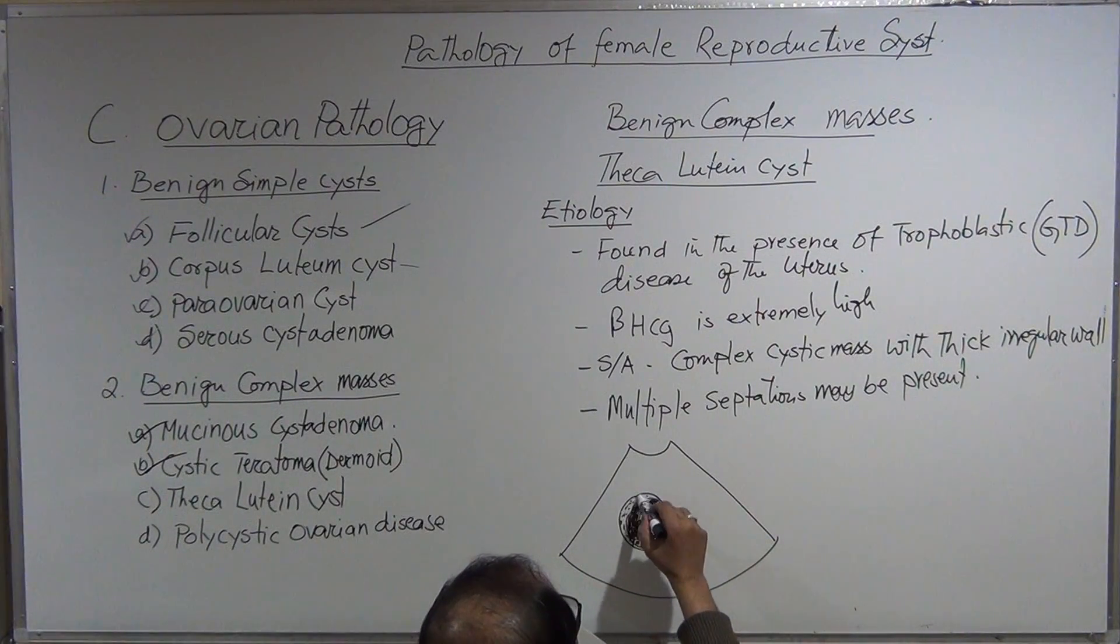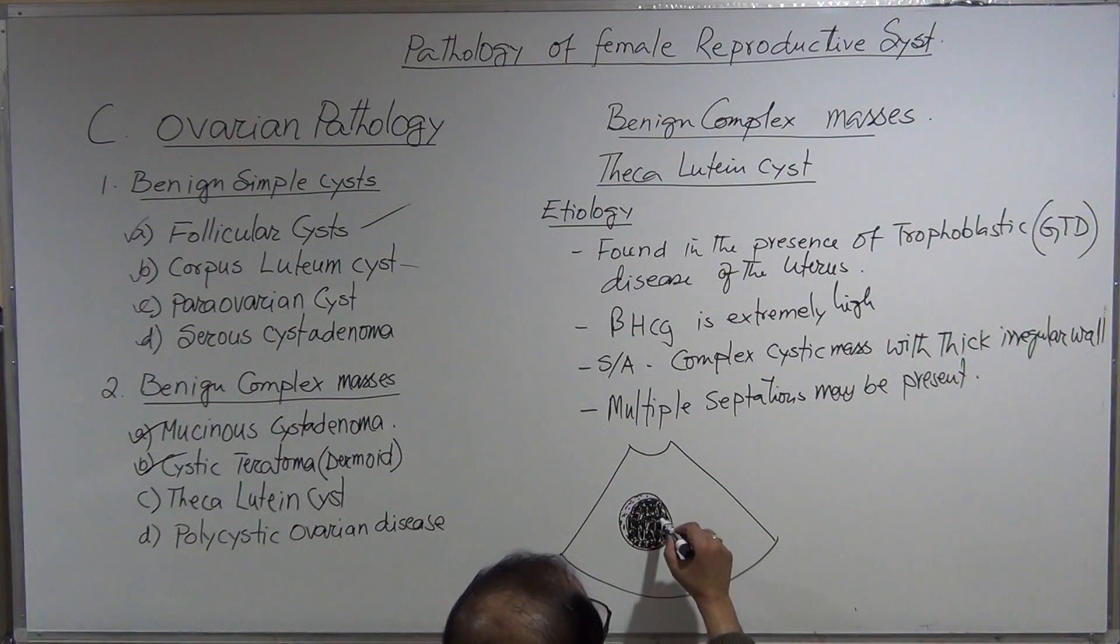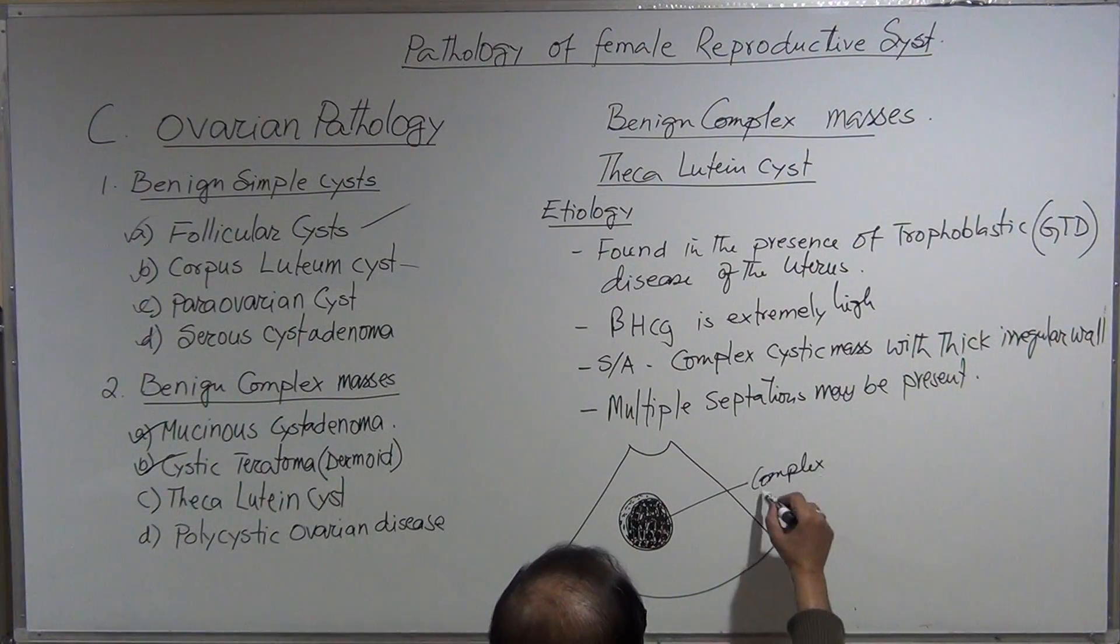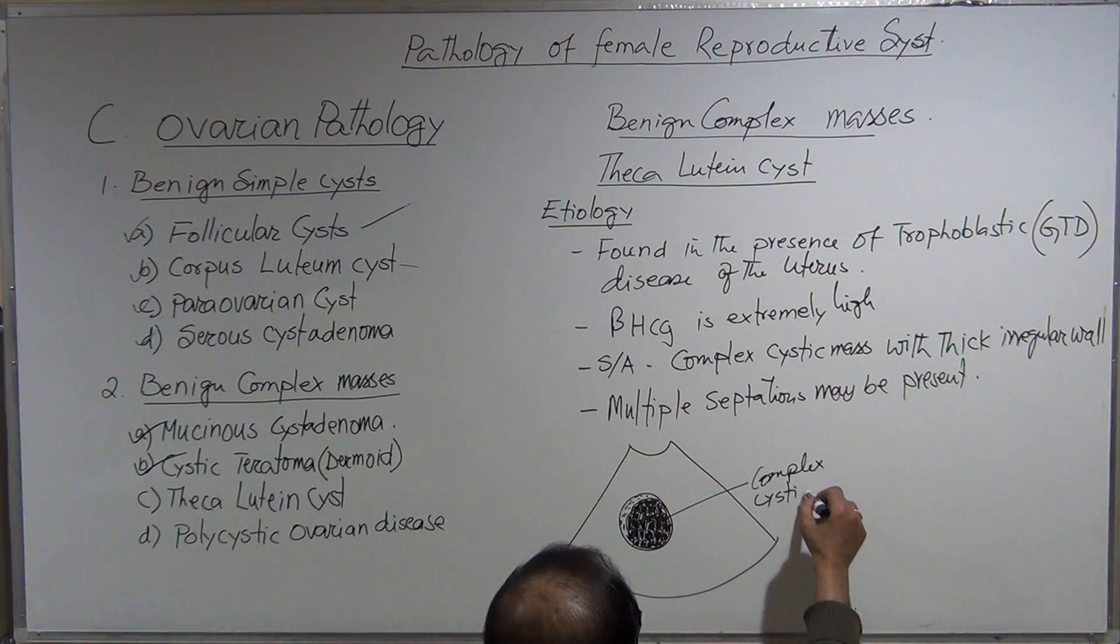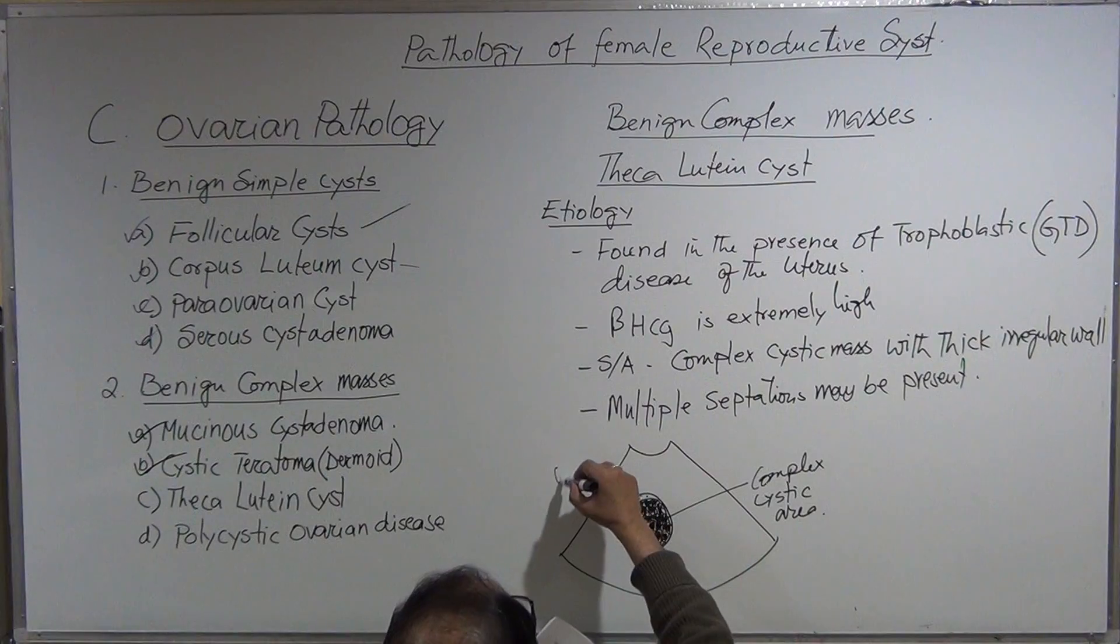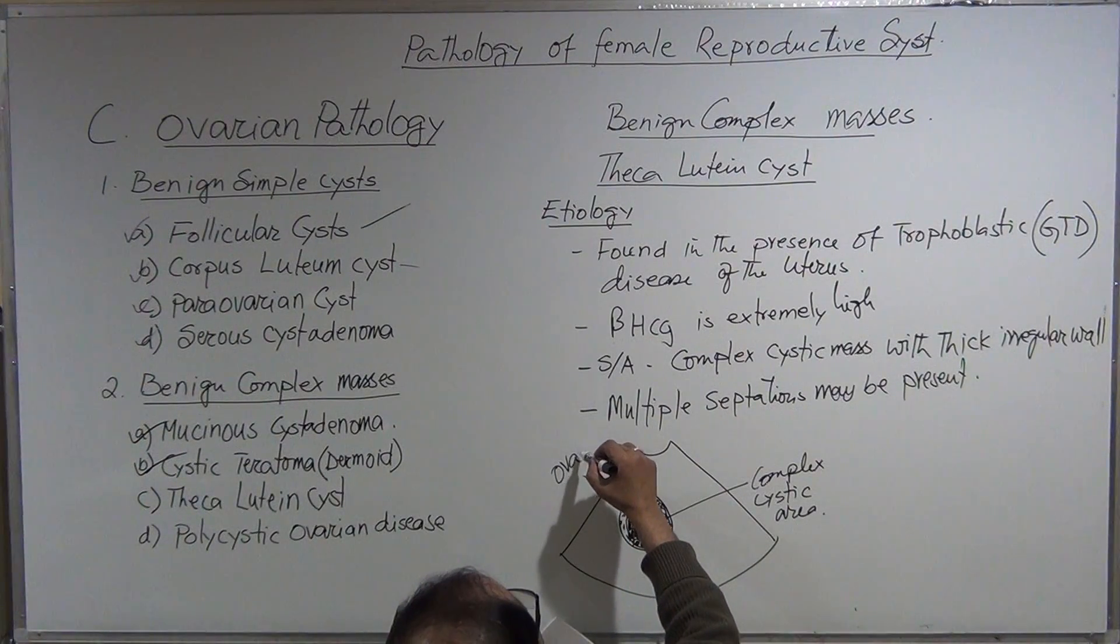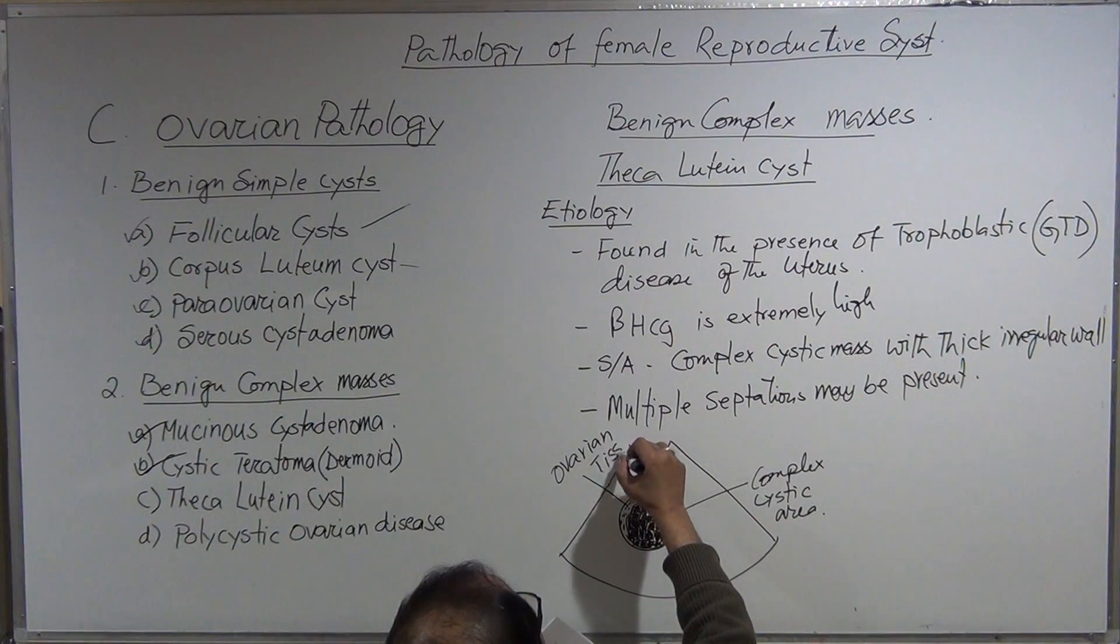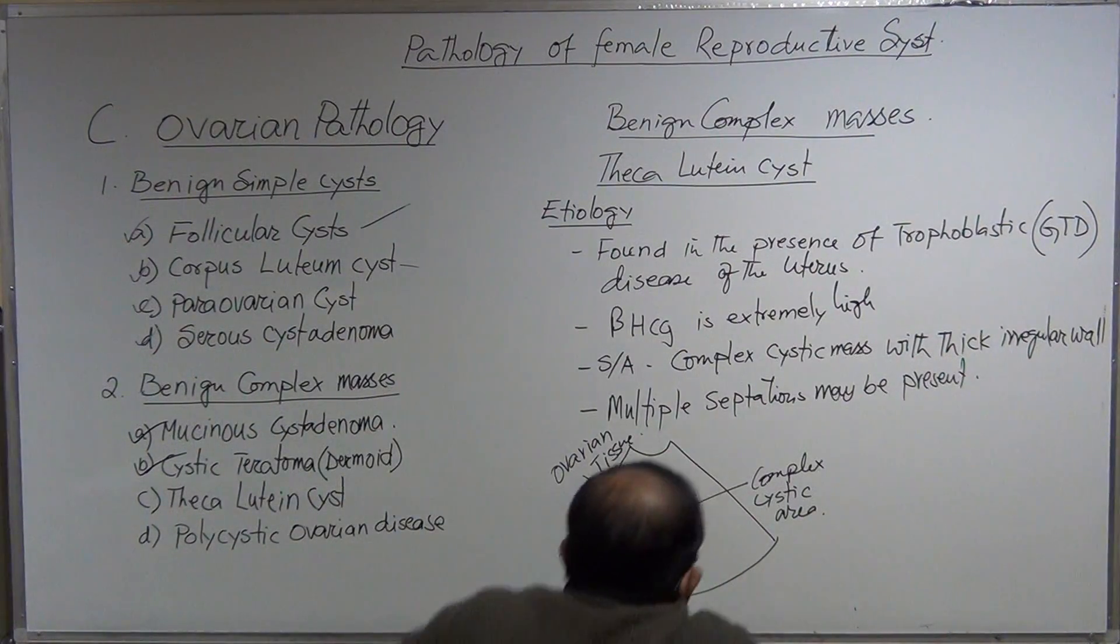This is ovary. So this is complex cystic area and this is ovarian tissue.